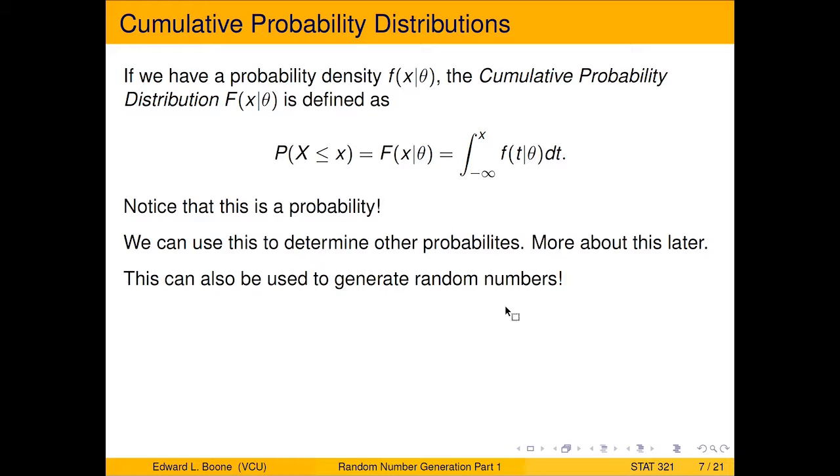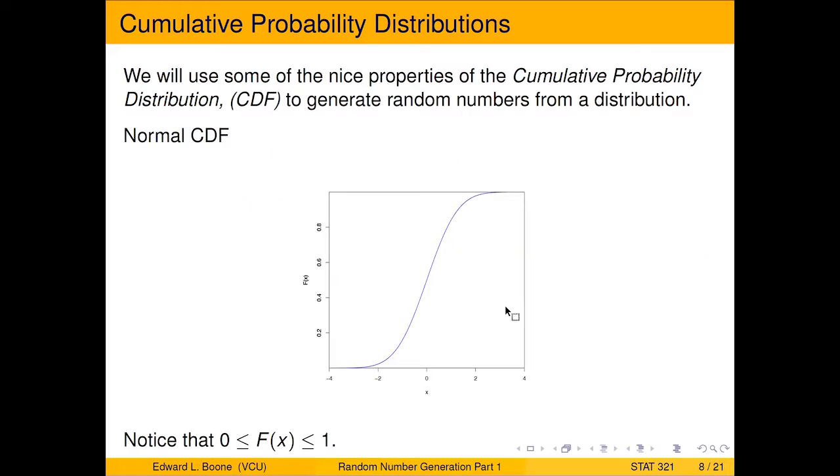And you can use it to determine other probabilities later. You've actually played with these before. If you've ever dealt with a normal table, it's a cumulative probability distribution function. It's just laid out in the table so you don't have to do all the math.